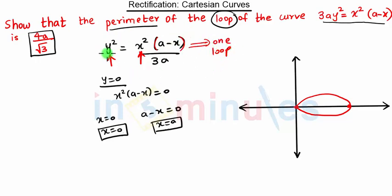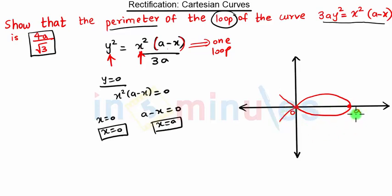To find the loop, put y = 0 and you get x = 0 or x = a. The curve looks like a loop between these two points. We have to find the perimeter of the loop — the length of the upper part and the lower part — which are exactly symmetrical, so we find the length of one part and multiply by 2.